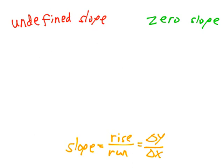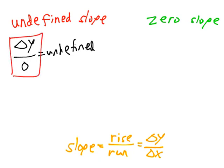If we recognize that delta y divided by zero is undefined, then we need to have a line that follows this idea to have an undefined slope.